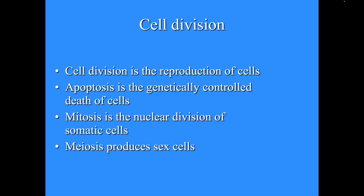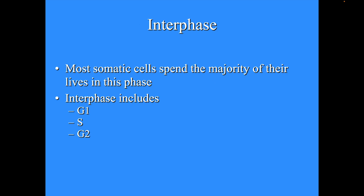Cell division in general is reproduction of cells. Apoptosis is generally controlled death of cells. Mitosis is the nuclear division of somatic cells, and meiosis produces sex cells.